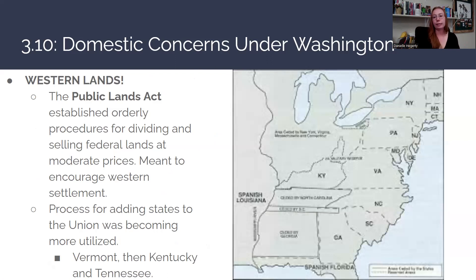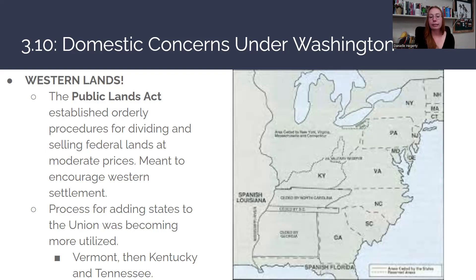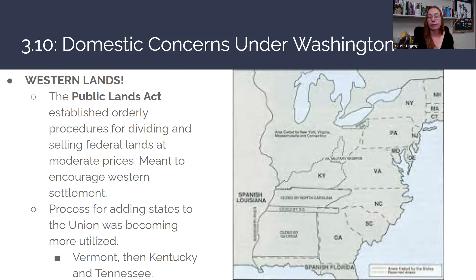The Public Lands Act established orderly approaches for dividing and selling federal lands at moderate prices to encourage westward settlement. There was also a growing process for adding states to the union — territories would write state constitutions, file for statehood, and await Congressional approval. New states emerging at this time included Vermont, Kentucky, and Tennessee.